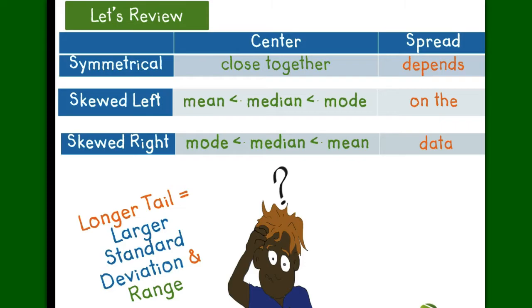Interquartile range is more resistant to the effect of long tails since it's looking only at the middle 50% of the data.